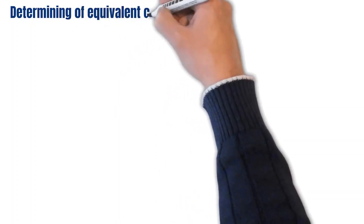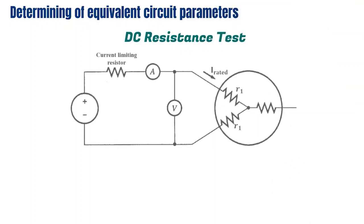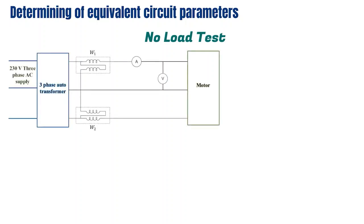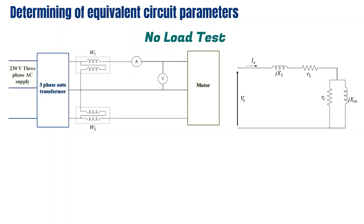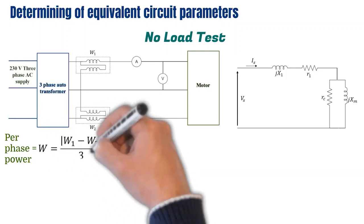Under the determination of equivalent circuit parameters, the first test is the DC resistance test. You can see the circuit arrangement on screen; the stator resistance R1 can be obtained using readings of a DC voltmeter and ammeter. Next is the no-load test, which is similar to the open circuit test in a transformer. The motor is allowed to rotate freely without a load by applying rated voltage at rated frequency. Since the rotor rotates without a mechanical load, the equivalent circuit is simplified, and two wattmeters are used to measure power. The per-phase power can be obtained as follows.